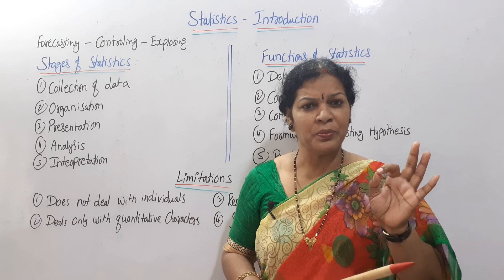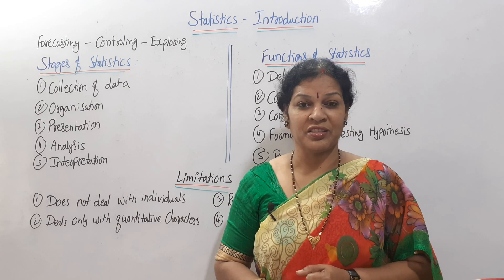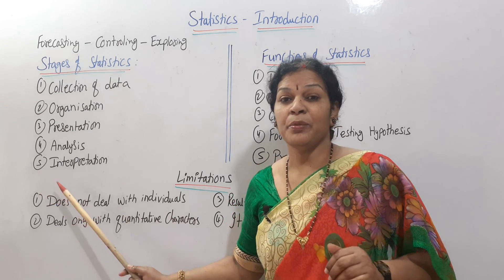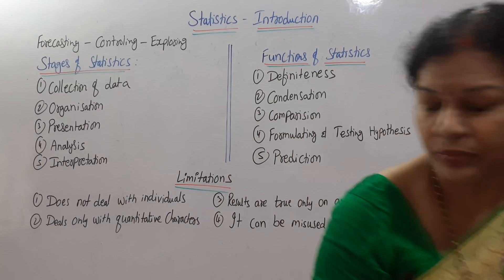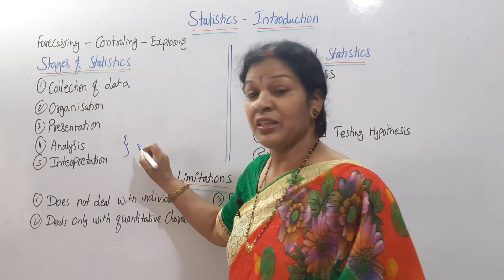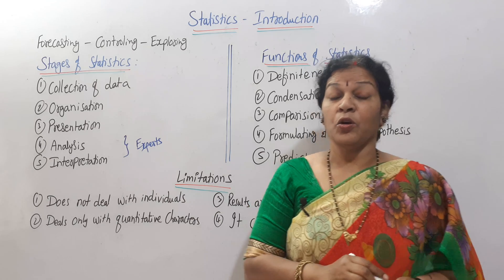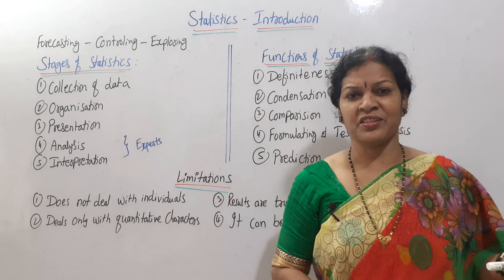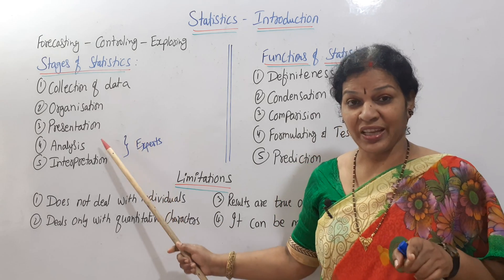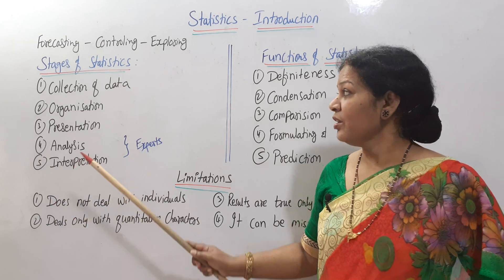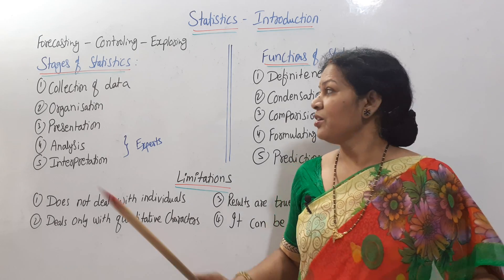Interpretation should be in simple and easy language so that a layman can understand what it is. Not everyone can do analysis and interpretation — both of these can be done by experts only, those who have good knowledge of statistics, who are well-versed, who have done MSc Statistics or BSc Statistics. Those experts can do analysis and interpretation. Once interpretation is over, that particular object is complete. These are the five stages of statistics.